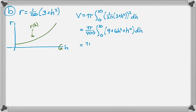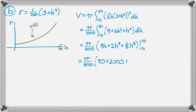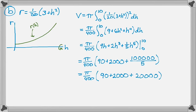And here we go. So pi over 400, it's going to be 9h plus 2h cubed plus 1/5 h to the 5th from 0 to 10. Fortunately, plugging in 0 gives you 0. So pi over 400, we're going to have 90 plus 2000 plus, what is that, 100,000 over 5? Okay. Let's keep going.